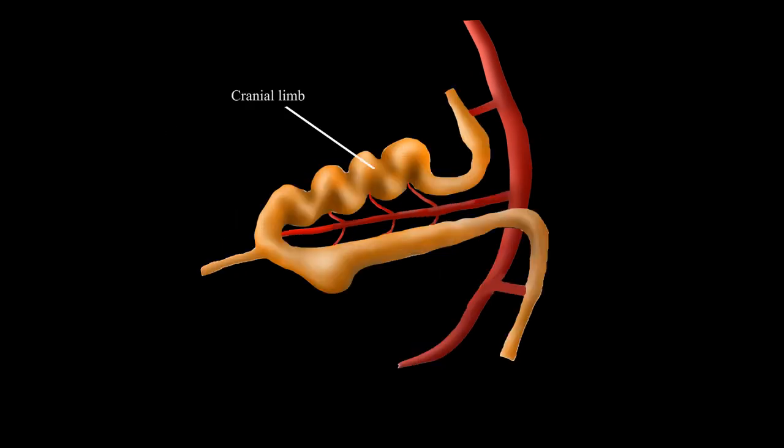The cranial limb of the midgut, now on the right side of the umbilical cord, becomes highly convoluted throughout the next few weeks.